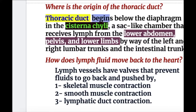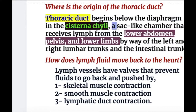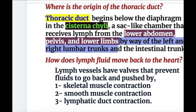The thoracic duct begins below the diaphragm in the cisterna chyli. The cisterna chyli is a sac-like chamber that receives lymph from the lower abdomen, pelvis, and lower limbs by way of the left and right lumbar trunk and intestinal trunk. So the cisterna chyli is the origin of the thoracic duct.